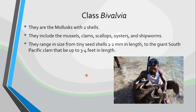The other class is class Bivalvia — the bivalves. Bi meaning two, valves meaning half. They are the mollusks with two shells. Here's a giant clam, and you can see the two halves of the shell. They include mussels, clams, scallops, oysters, and shipworms. They range in size from the tiny seed shell of one to two millimeters in length, to the giant South Pacific clam which can be up to three to four feet in length — so there's a huge difference in their size and shape.